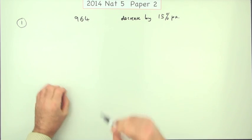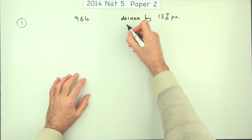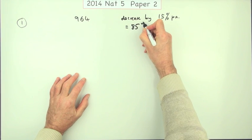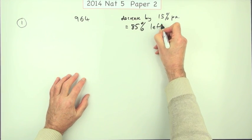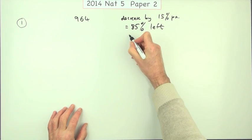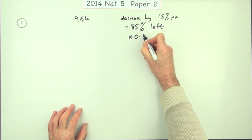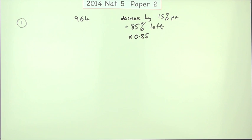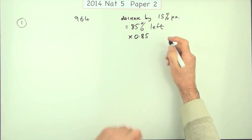You're expected to know that if you decrease something by 15%, that means you'll have 85% left. To find 85% of something, that's equivalent to a factor of 0.85. That's what you're using in your calculator, and that would be the first mark.